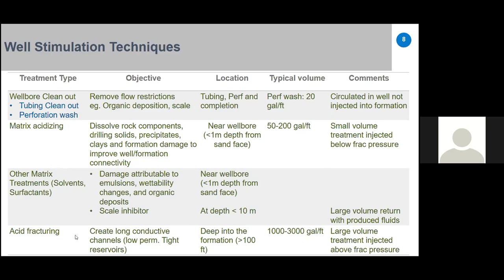The last technique is acid fracturing. Its objective is to create long conductive channels. This technique is used in low-permeability reservoirs. The acid fracture penetrates deep into the formation, with fracture half-lengths greater than 100 feet. Typical volume is 1,000 to 3,000 gallons per foot. This is a large-volume treatment injected above the fracture pressure gradient.